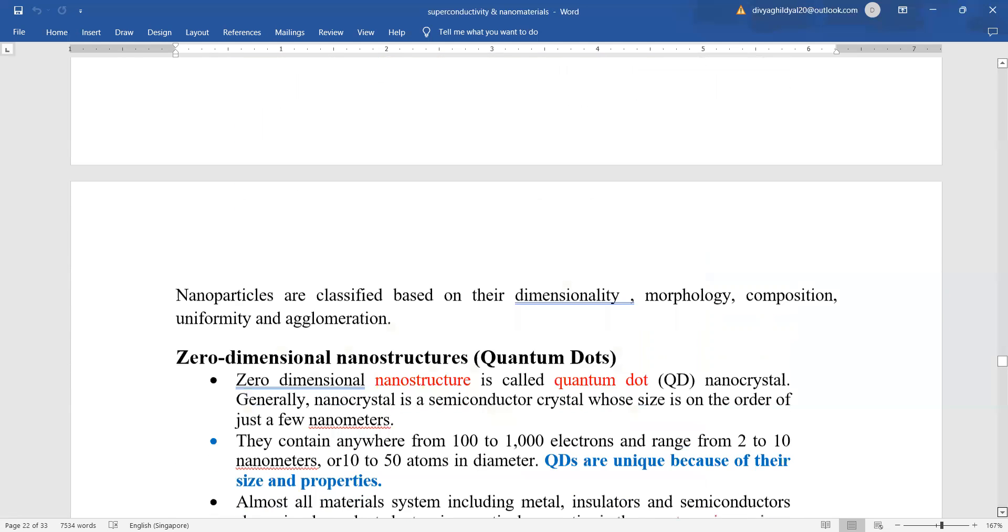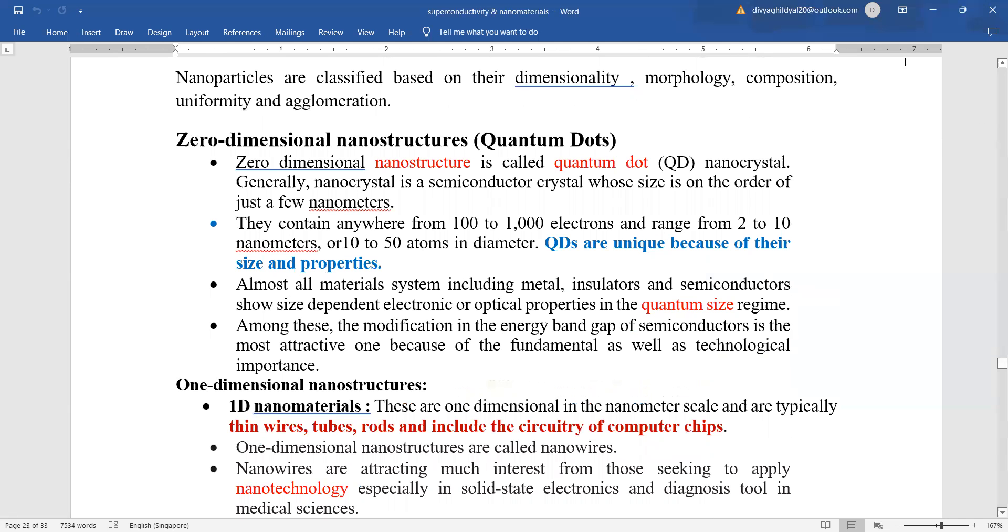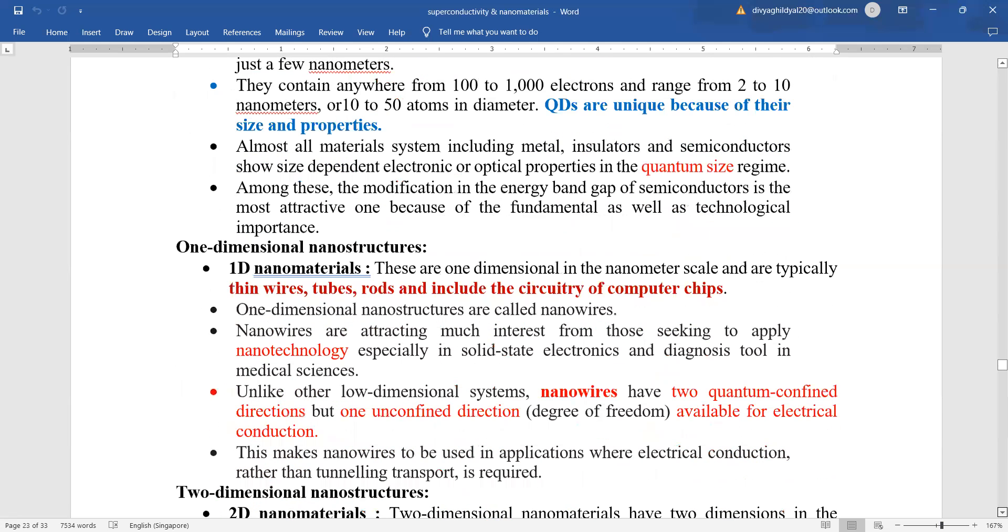Now, let us see. Nanoparticles are classified on the basis of their dimensionality, composition, morphology, uniformity, etc. The zero-dimensional nanostructures, that is the quantum dots or nanocrystals, whose size is of the order of a very few nanometers, are unique because of their size and properties. All material systems including metal, insulator, and semiconductors show size-dependent electronic or optical properties in the quantum size.